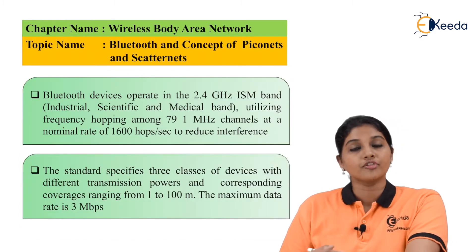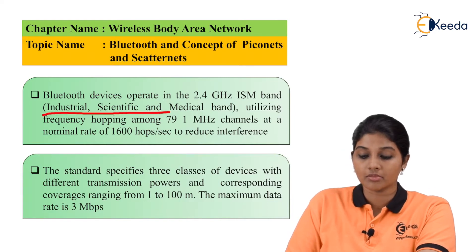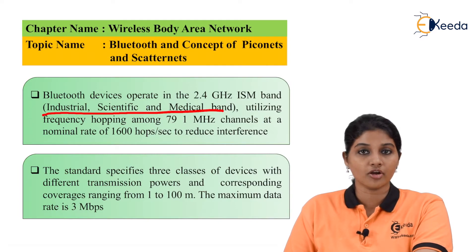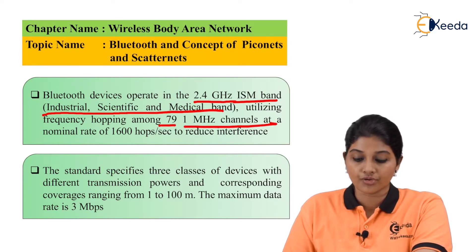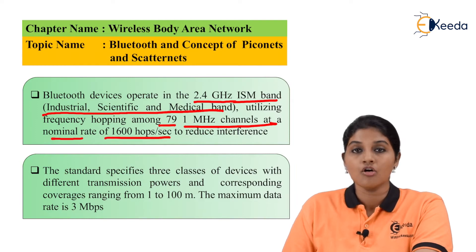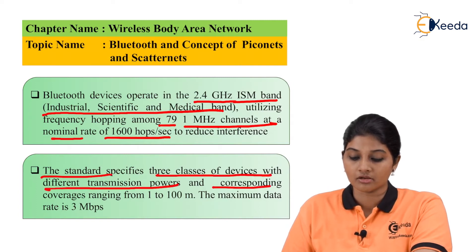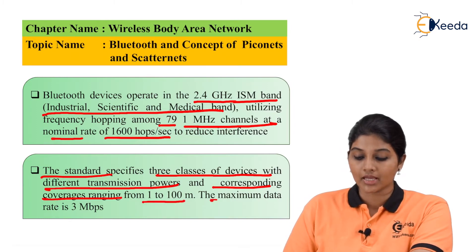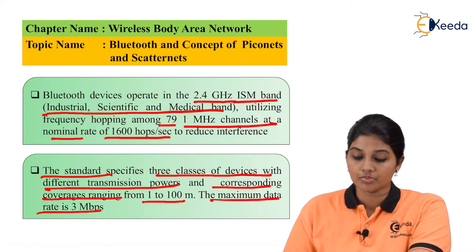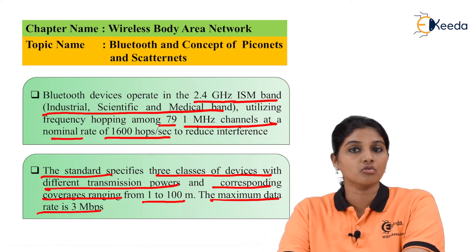Now let's look at the frequencies used for Bluetooth. There are different frequency ranges provided for industrial, scientific, and medical purposes. This band is the 2.4 GHz ISM band, with a frequency hopping of 71 MHz channels and a transmission rate of 1600 hops per second for reducing interference. The standard specifies three classes of devices with different transmission power and corresponding coverage, ranging from 1 to 100 meters, with a maximum data transfer rate of 3 Mbps.